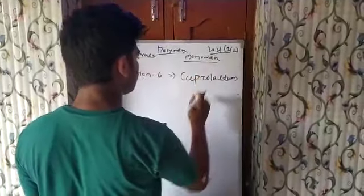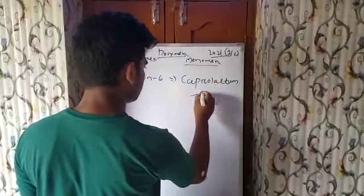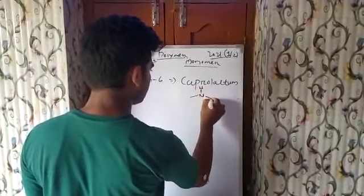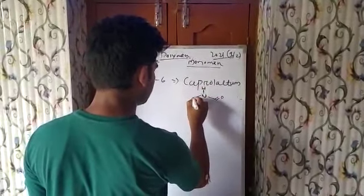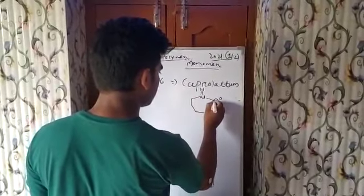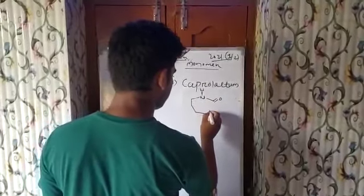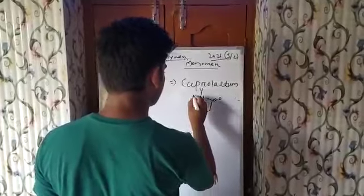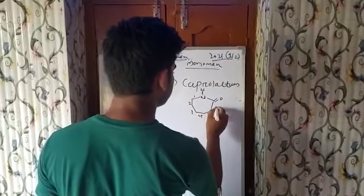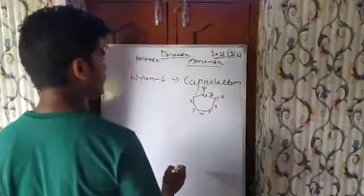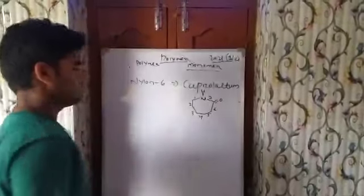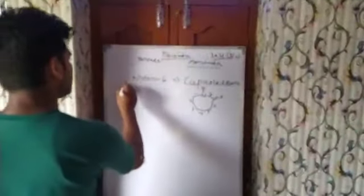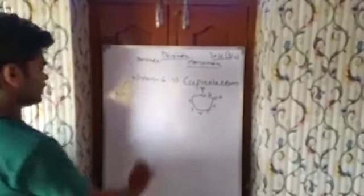Monomer is caprolactam. What is the structure? NH double bond O over 7-ring: 1, 2, 3, 4, 5, 6, 7. Seven ring, here double bond O present and NH group present. It is known as caprolactam.